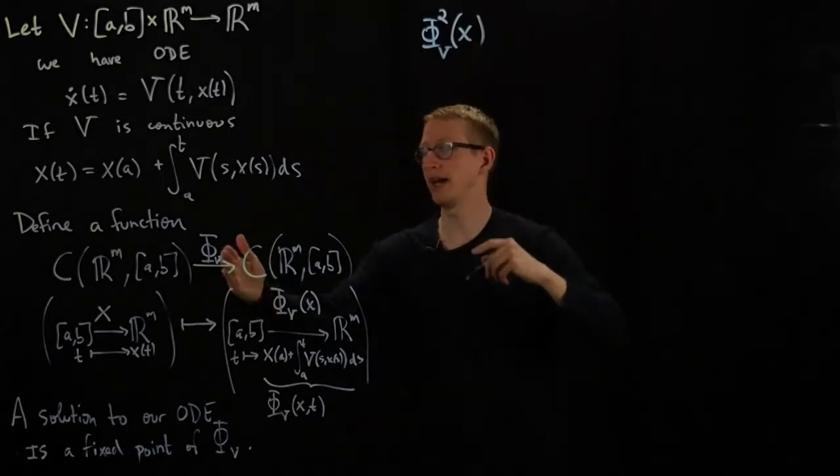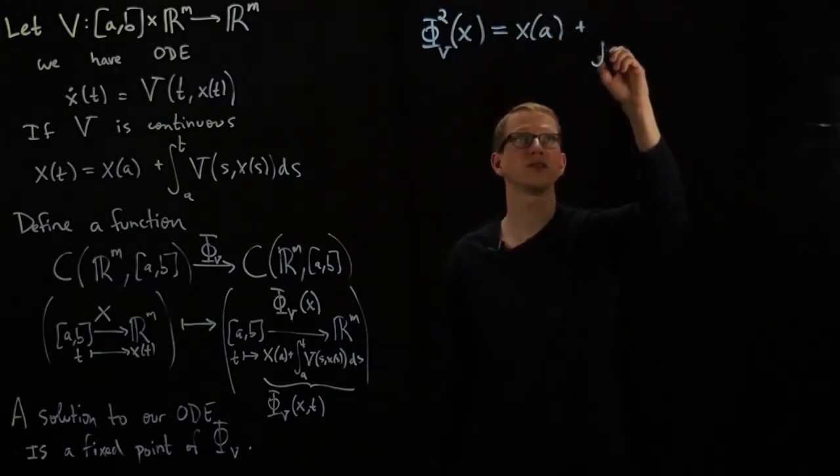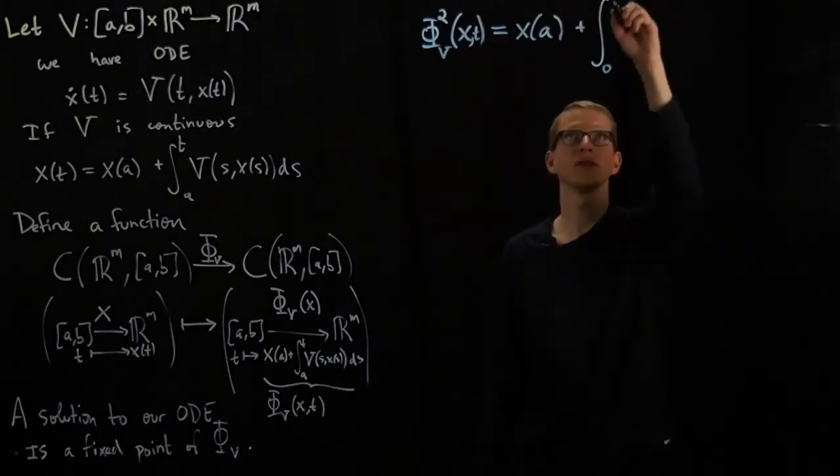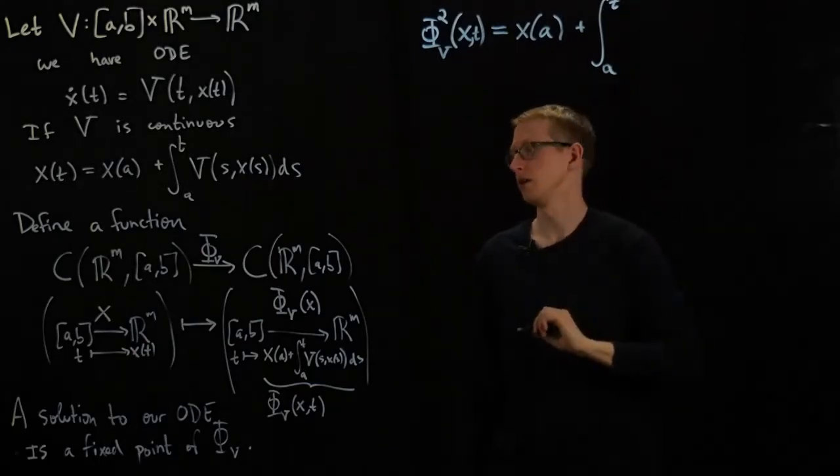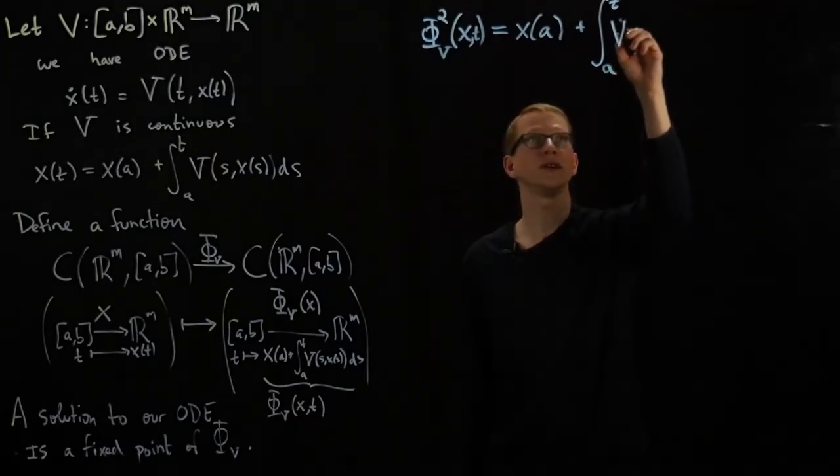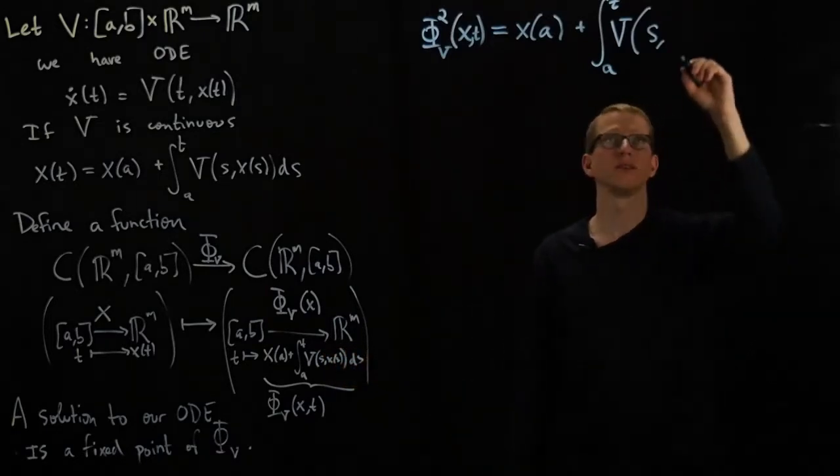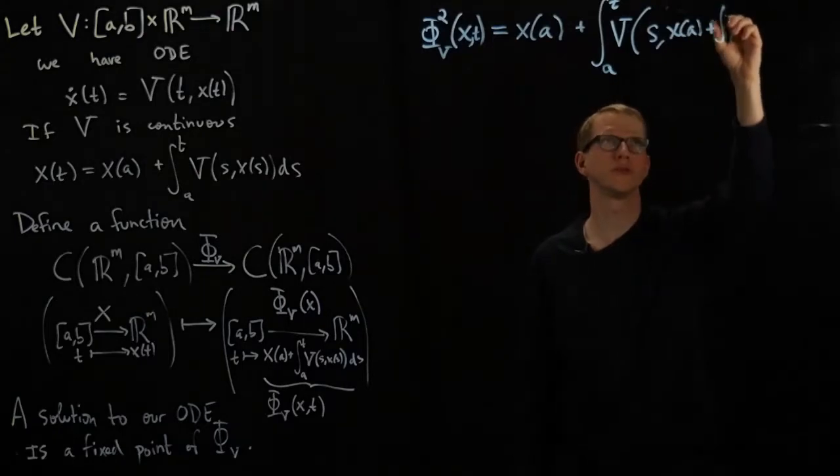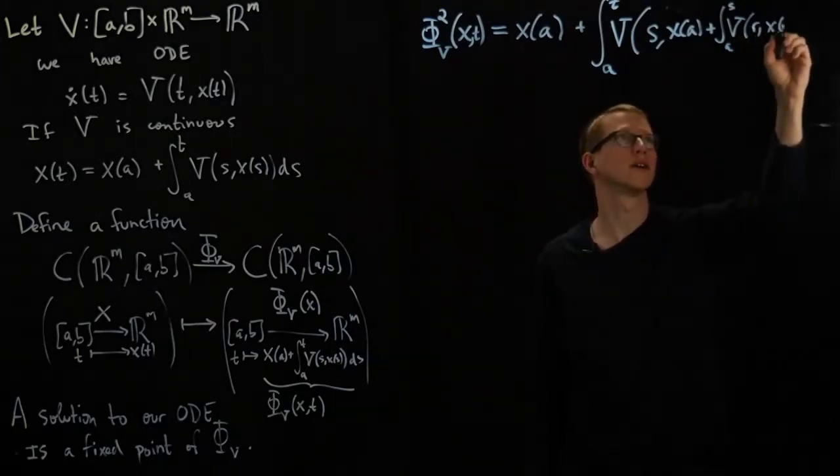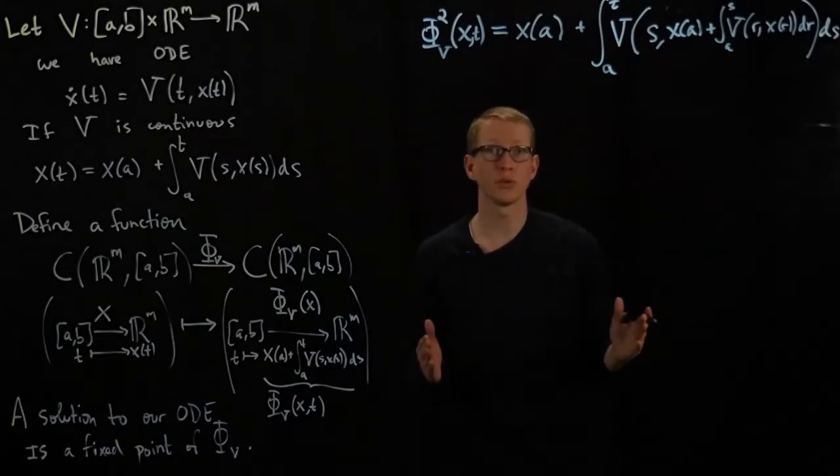But it helps to actually write this out explicitly. What happens if I take an arbitrary function x and I apply this twice? What I get is x_A plus the integral from A to t of this function, and this is supposed to be V(s, x(s)), but that's what we initially plugged in here. So that's going to be x_A plus the integral from A to s of V(r, x(r)) dr, then ds. So this is what happens when we iterate that function twice.